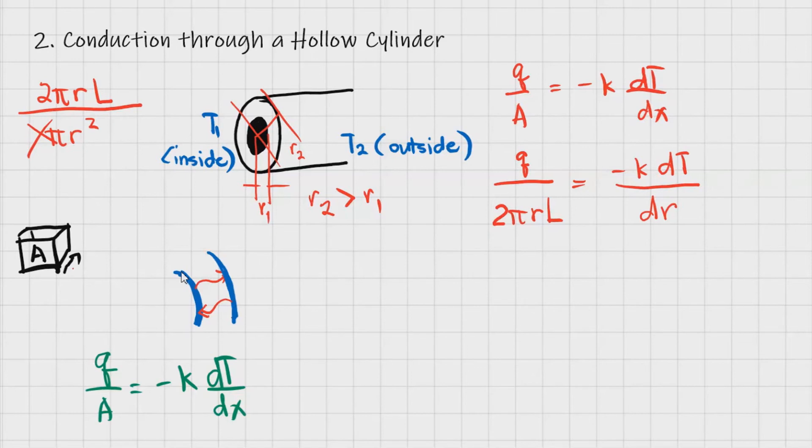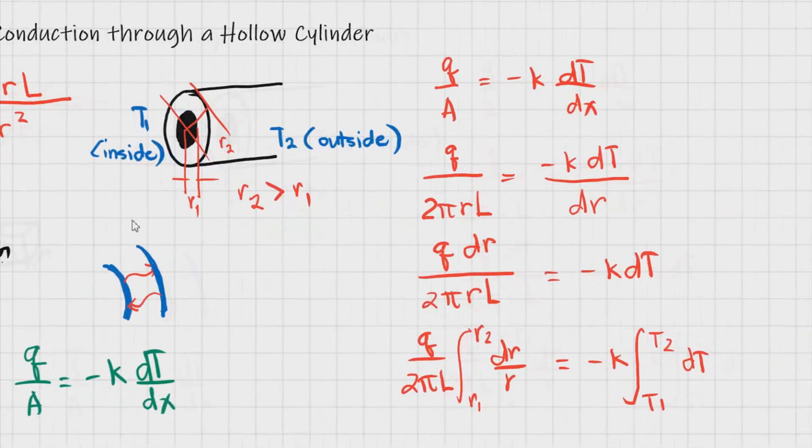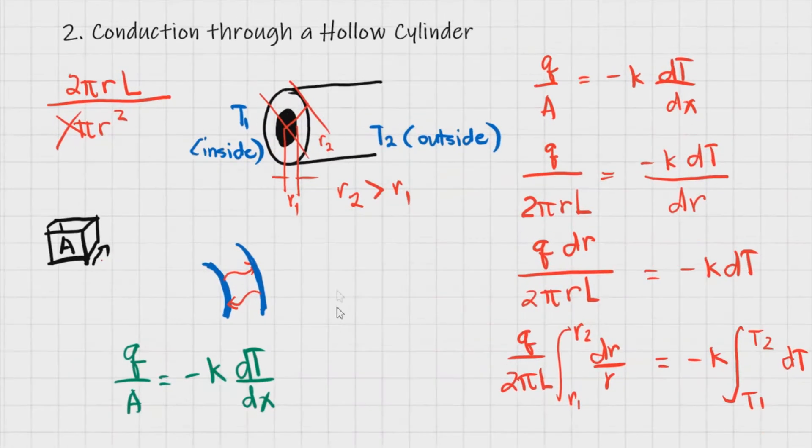We can now try to evaluate this to get our final equation. So let's just separate the variables. We have q and then this one is dr over 2πrL. This is equal to negative k dt. Remember, the length of the pipe is constant but our radius is different. So with that, we can now simply just factor out the constants and then just integrate dr over r.